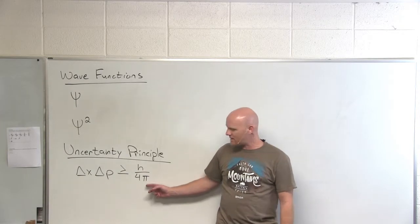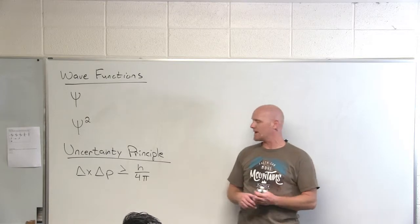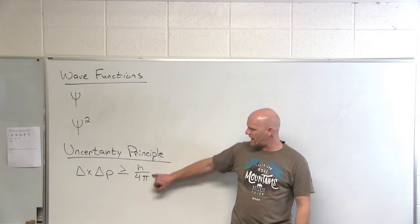Sometimes write that as h-bar over 2, but h over 4π is how your book has it. So write it that way as well. The uncertainty in the position and the uncertainty in the momentum.